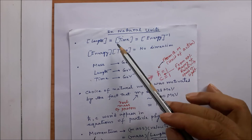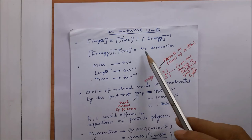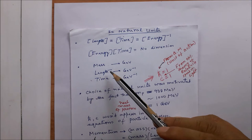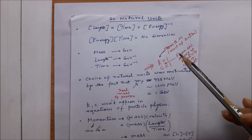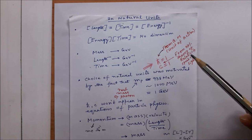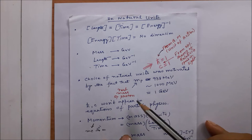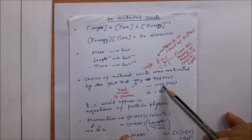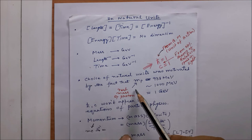Let us now move to natural units and some consequences thereof. In natural units we choose length and time to be of the same dimension, expressed as energy-inverse, so that energy times time has no dimension. As mentioned in lecture P2A, mass is measured in GeV, length in GeV-inverse, and time in GeV-inverse. From quantum mechanics, h-cross is put equal to 1, and from special relativity, c is taken to be 1. This choice was motivated because the rest mass of a proton has a value of approximately one GeV.